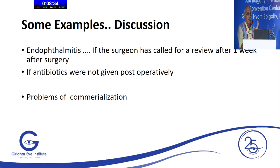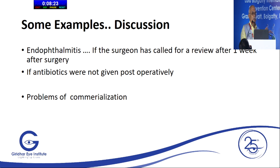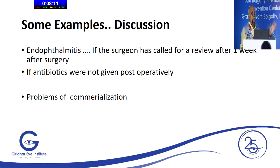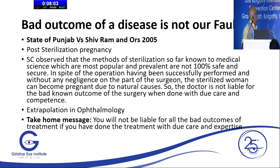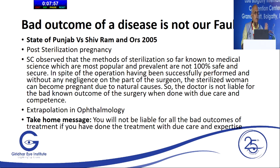Many endophthalmitis cases occur when a doctor sees the patient only after one week of surgery. If a patient develops endophthalmitis the next day or after two days and the doctor has not seen them, there is negligence. Nowadays, freelancing cataract surgeons go to one place, do surgery, and then someone else sees — or no one sees — until a week later. The expert standard says you have to see the patient the next day or when there is a problem. Also importantly, a bad outcome of a disease is not the fault of the doctor. If you do a cataract surgery in good intention and do everything properly but the patient unfortunately gets endophthalmitis, you are not liable for bad outcomes if you treat properly.